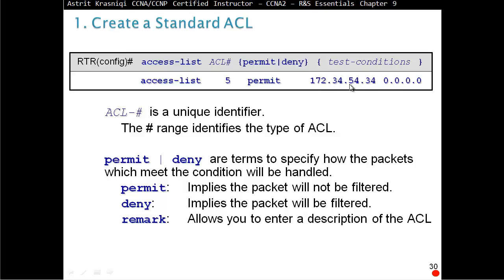We can also have a remark, which allows you to enter a description of an access control list. Then the IP address of what you're permitting or denying — for example, a network address. Only the source IP address will be checked as the test condition. So: access-list, give it a number — that 5 defines this is a standard ACL. Permit, and then we are permitting this single host.